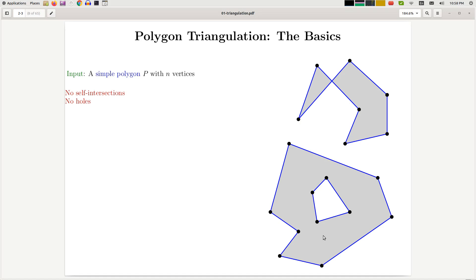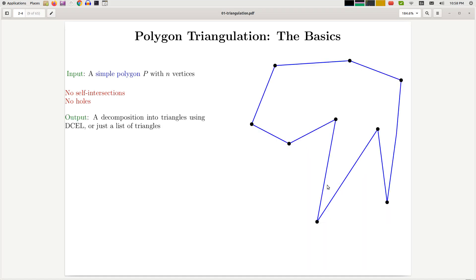And in this picture we have a hole inside the polygon. So this part is not part of the inside, it's part of the outside. Before going to the algorithm, we want to show that triangulation of a polygon is always possible.